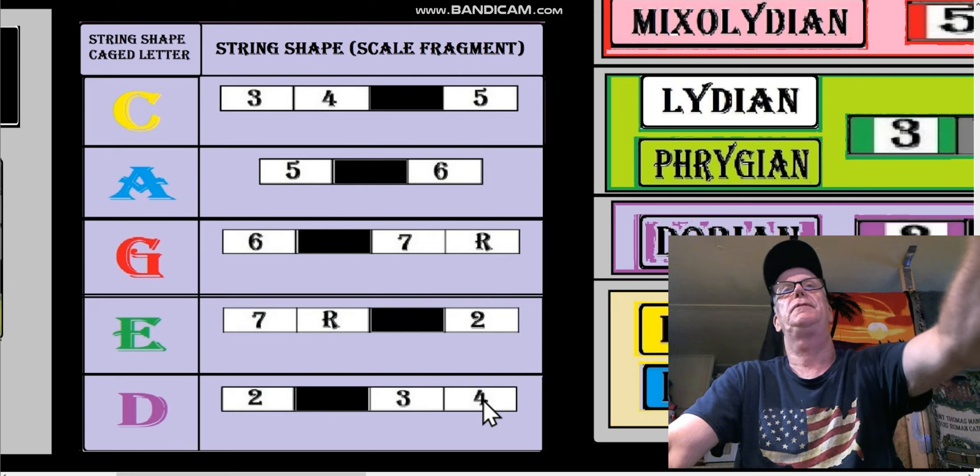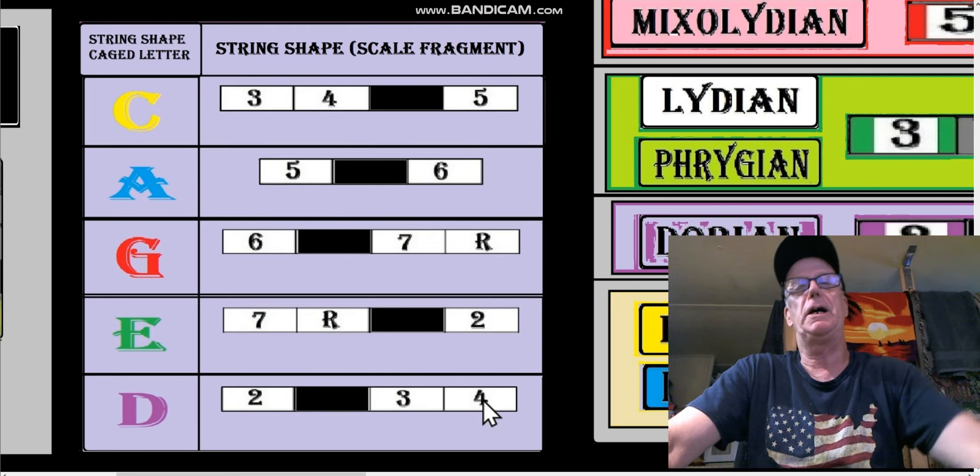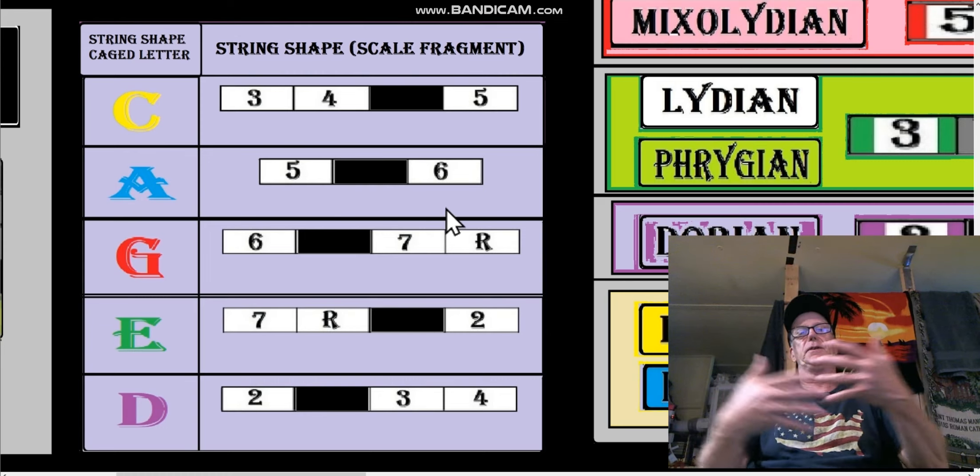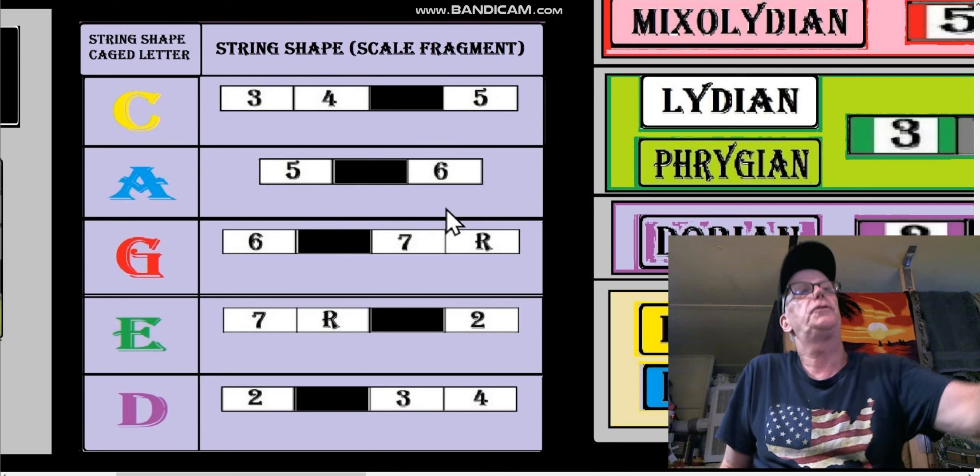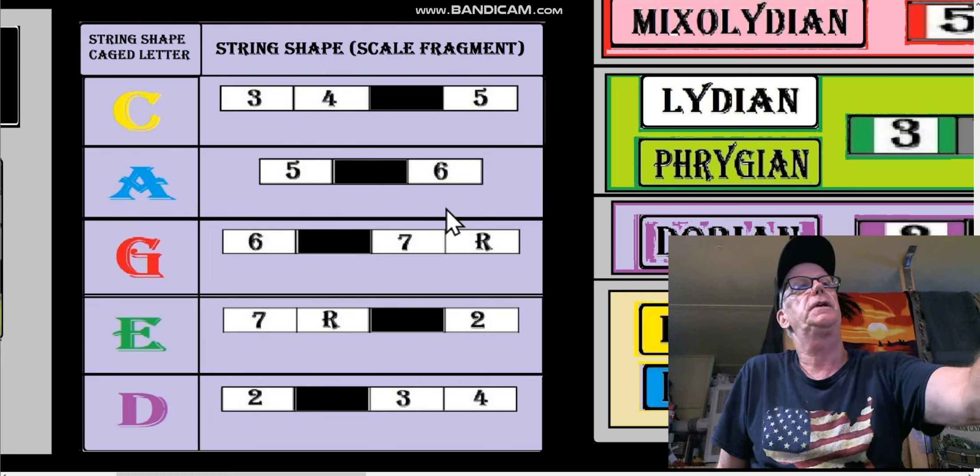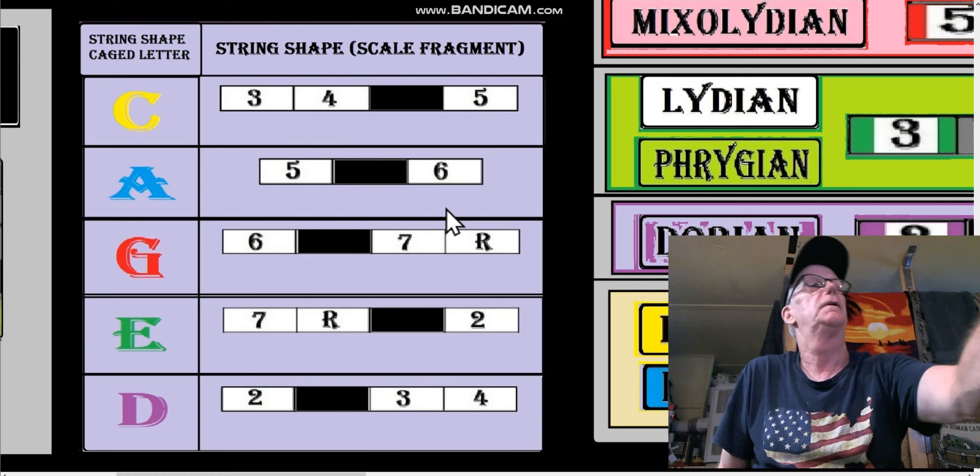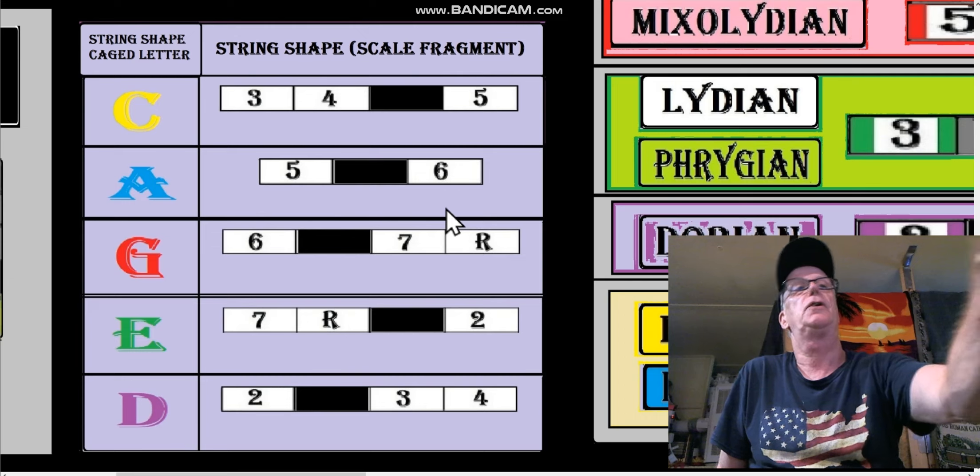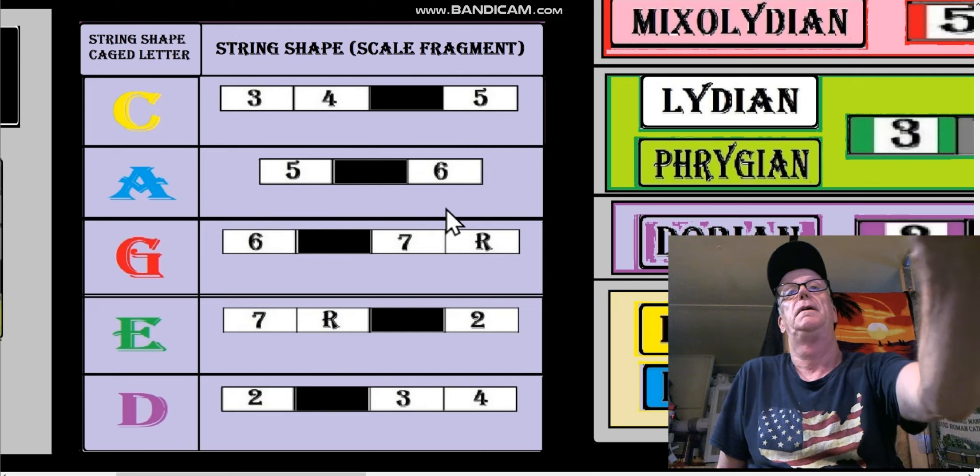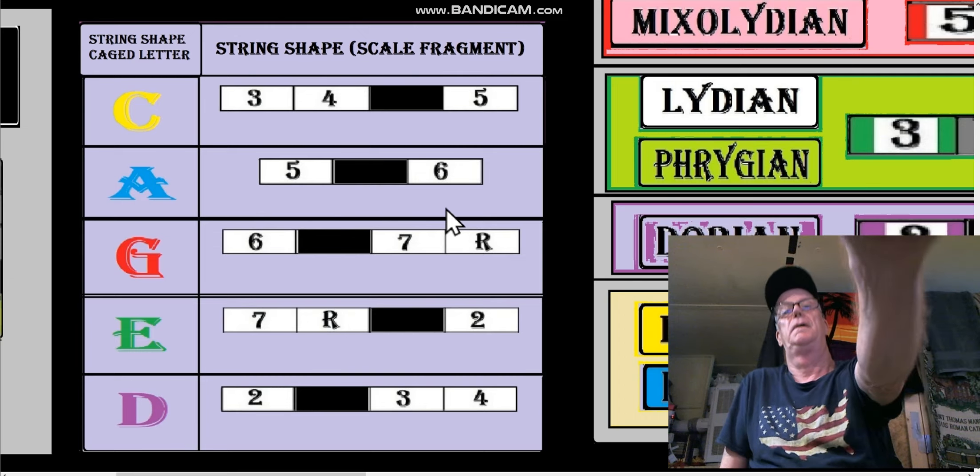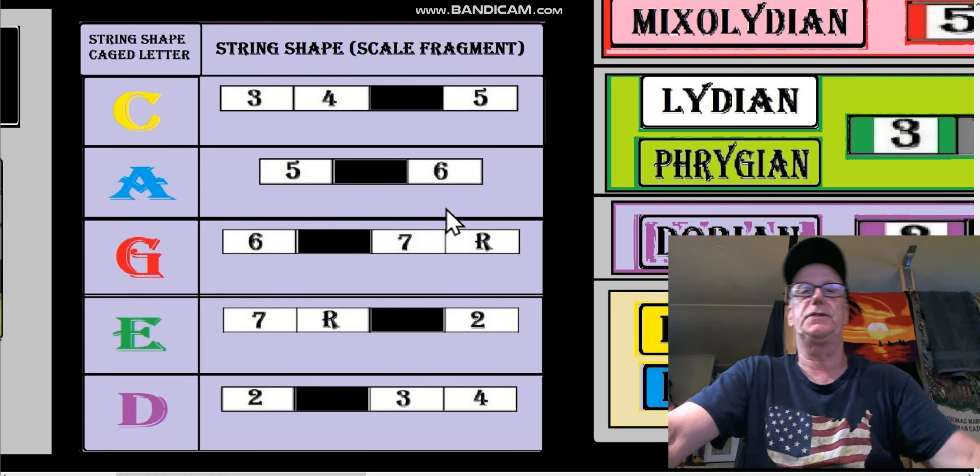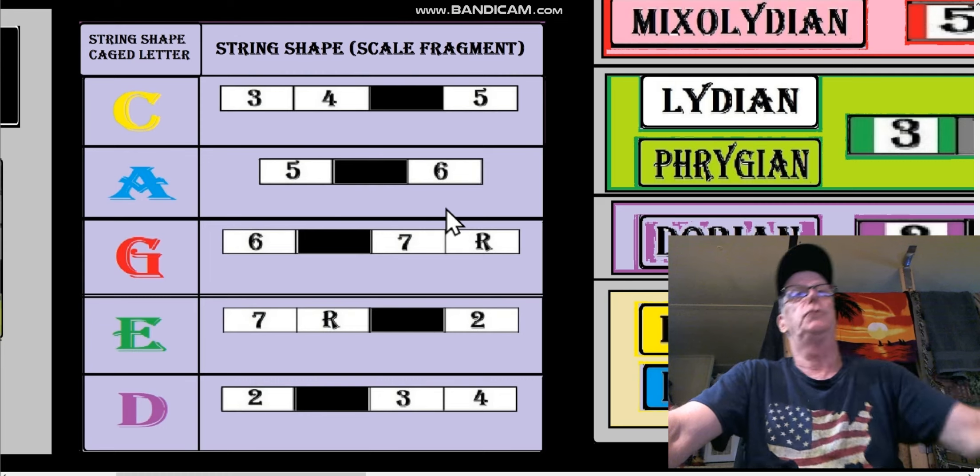No matter what the key is, these are the string shapes and we're going to put them together to make major scales and also the modal scales. It's like all the ivory keys - all the white keys, it's the key of C on a piano. So learn them first.